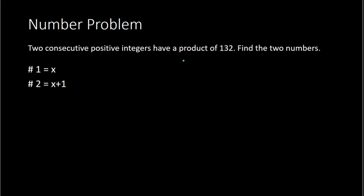From here, it says that they have a product of 132. Now when it says product, that means multiply. So when I multiply x times x plus 1, that product will equal 132.